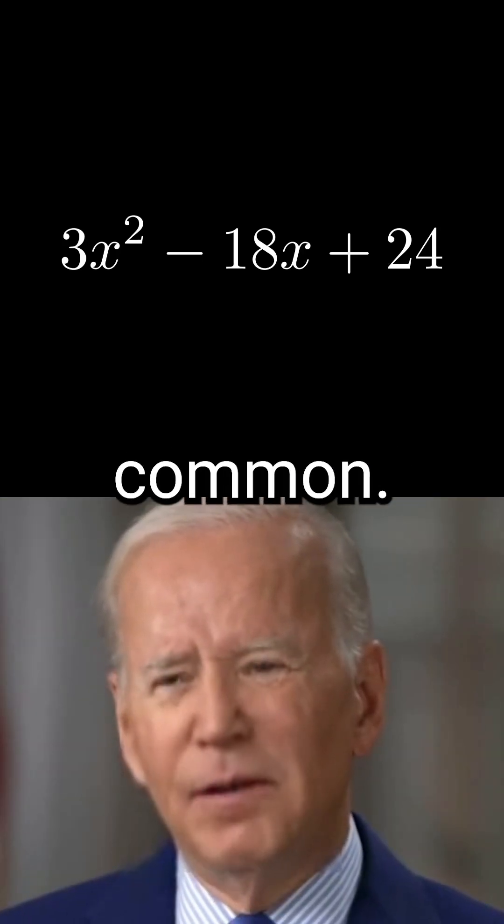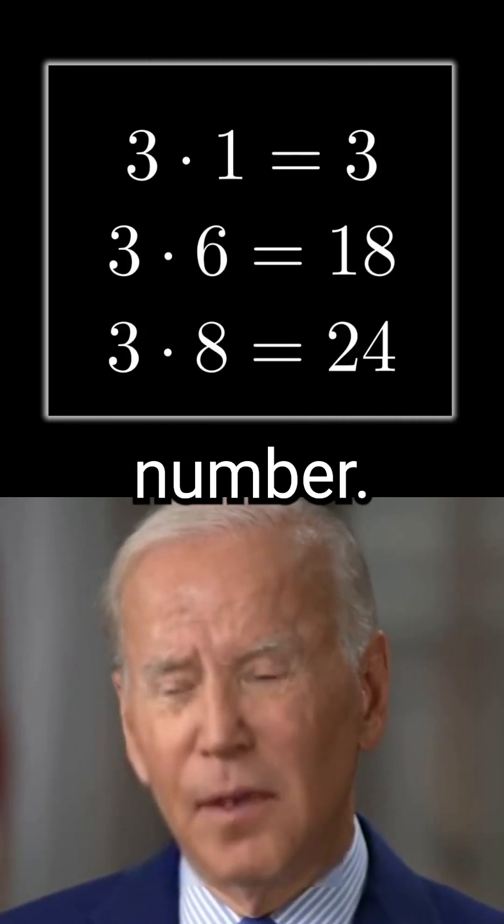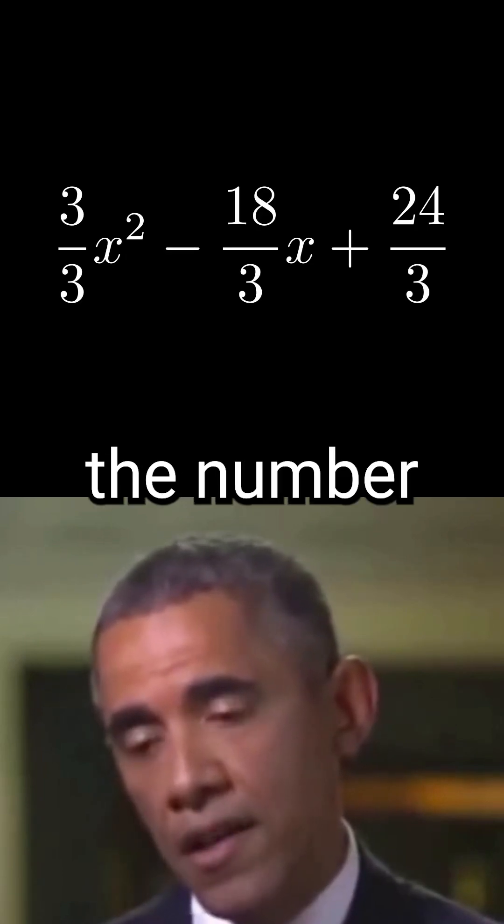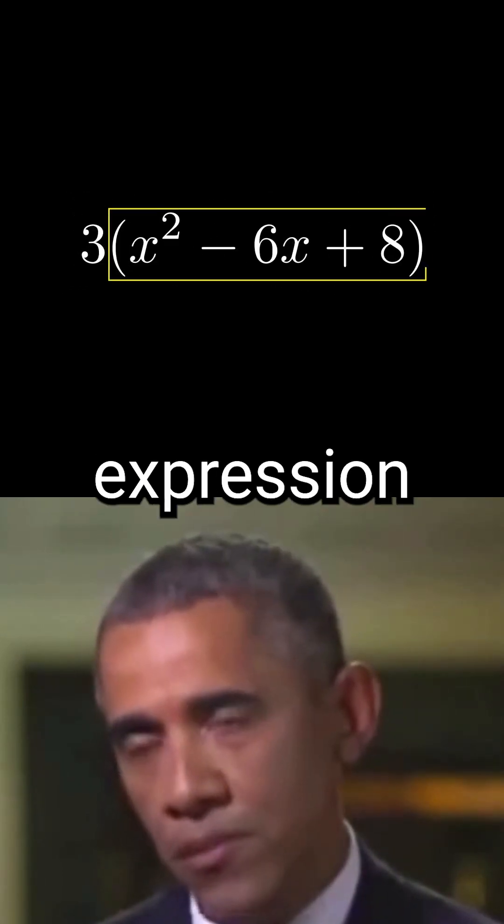All these terms do have a factor in common. It is 3 because 3, 18 and 24 all are the result of 3 times some number. Good job, Joe. So now we factor that out, which basically means to pull the number out of all these terms by dividing all by 3. And now we can factor this easier expression.